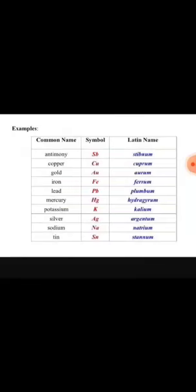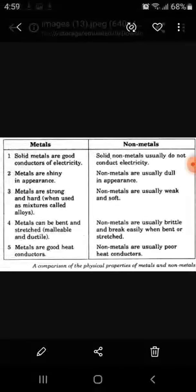Non-metals have a dull appearance. Second property: metals are hard and strong, but non-metals are mostly weak. Third: metals are dense — they are heavy for their size — but non-metals have low density, meaning they are light for their size.